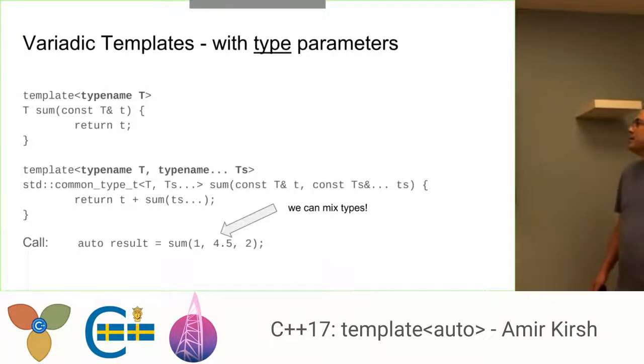When we come to variadic templates with type parameters, we can see that each type can be different, which means you have, for example, a sum and you want to sum different types. This is doable. So T can be any type, and you can see that you can mix the types quite easily. No news here.